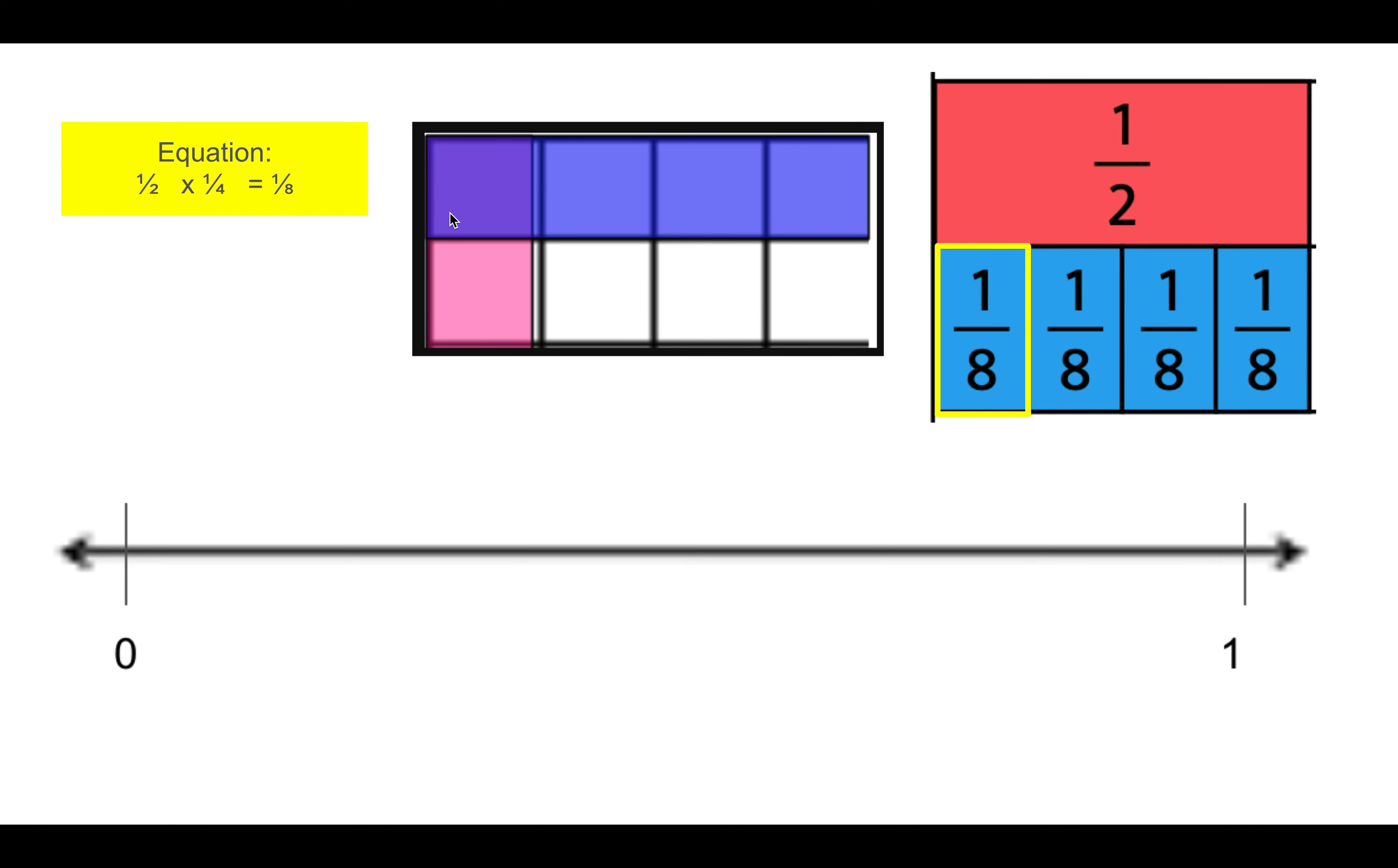And that made one eighth dark purple. In this one we found half, and then we found one fourth of that half, which is one eighth.